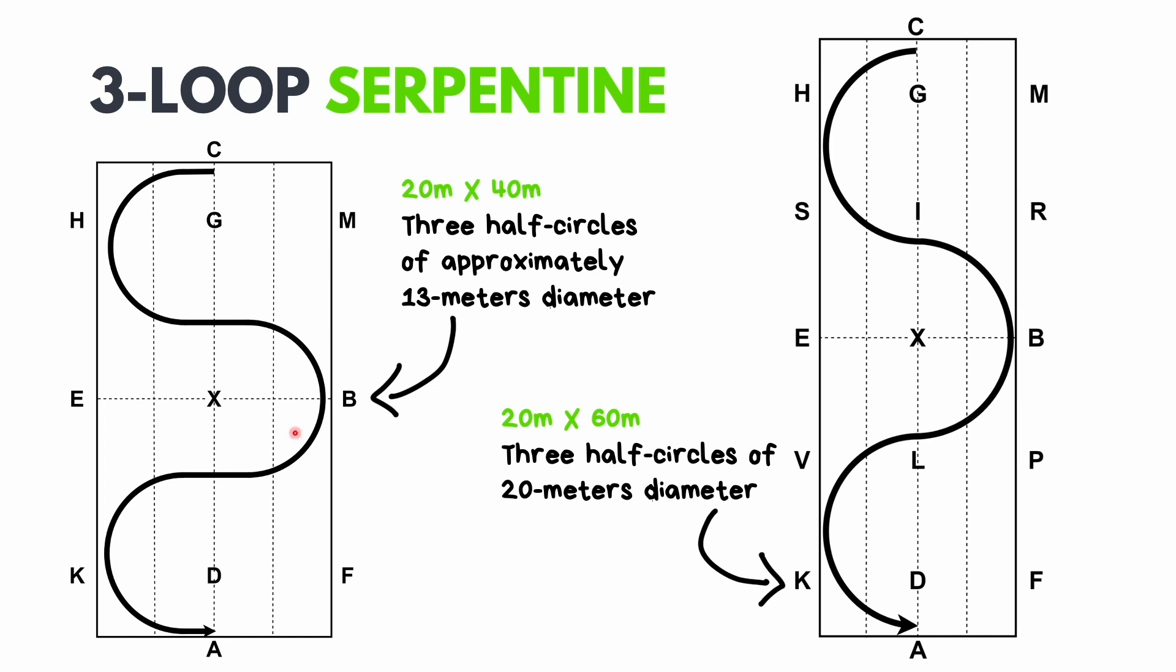Hopefully from this you can see that it's easier to ride this exercise in a 20 by 60 arena than in a 20 by 40 arena, and there's two reasons for this. Firstly, it's much easier to find three 20 meter circles than three 13 meter circles, which can be very difficult to place.